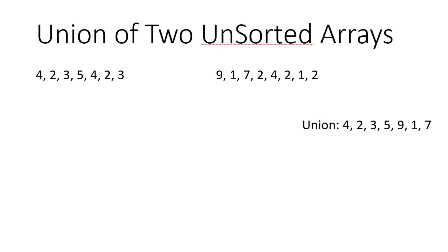Welcome to Coding Simplified. We'll solve a new problem in arrays. We are given two unsorted arrays with no pattern, and we need to find their union. Union means that if we merge both arrays, there should be no duplicate elements. For example, the final union should be: 4, 2, 3, 5, 9, 1, 7.